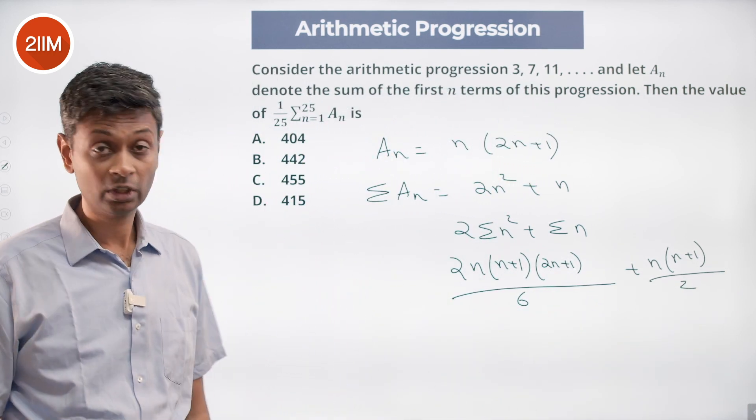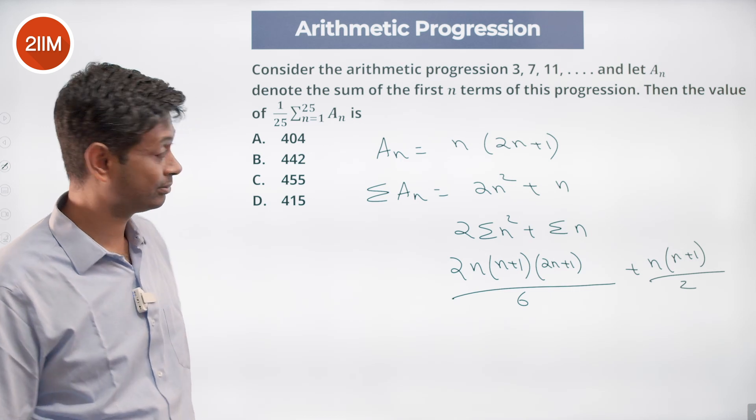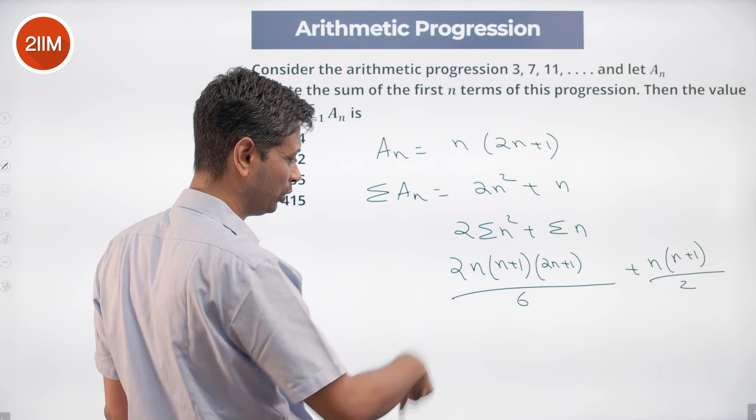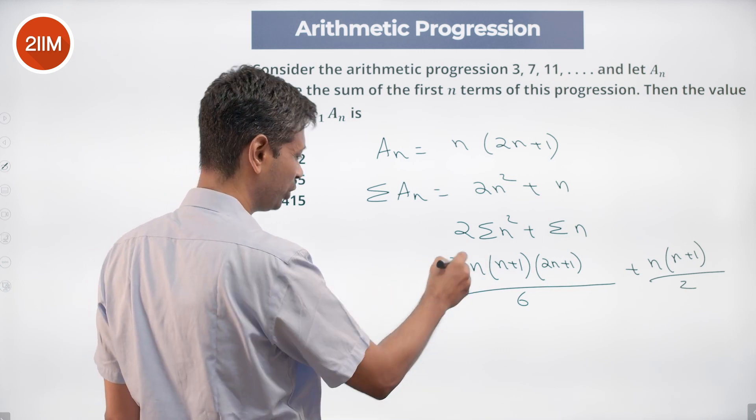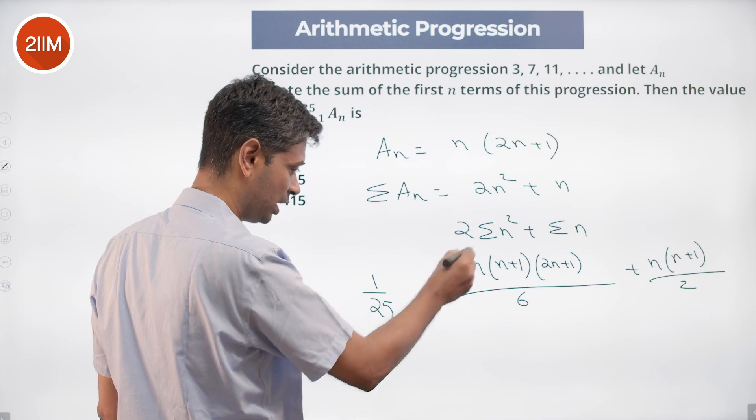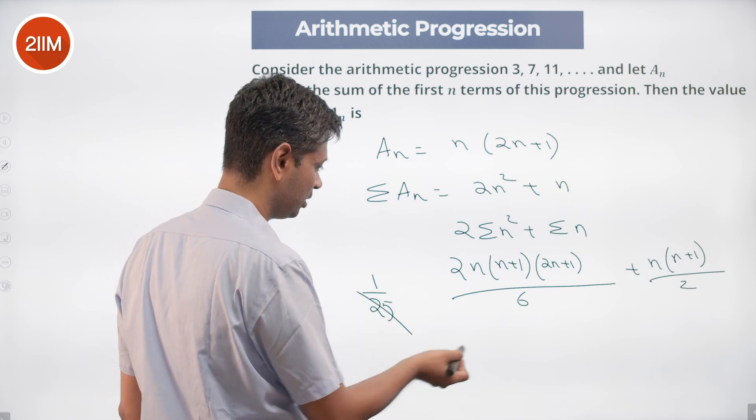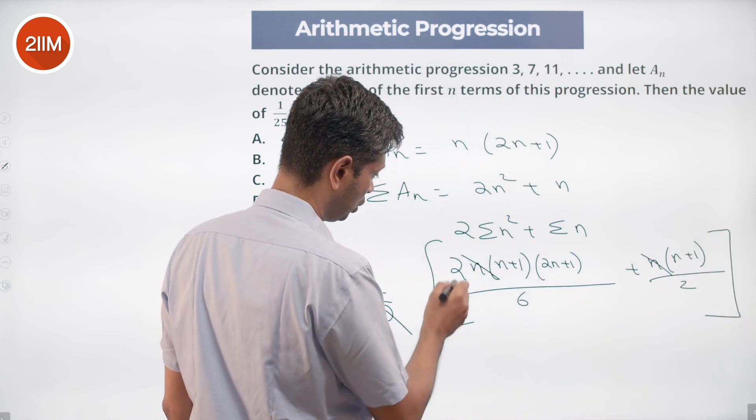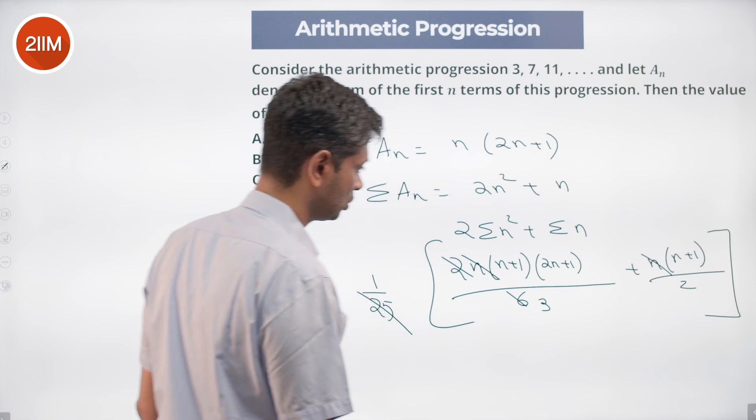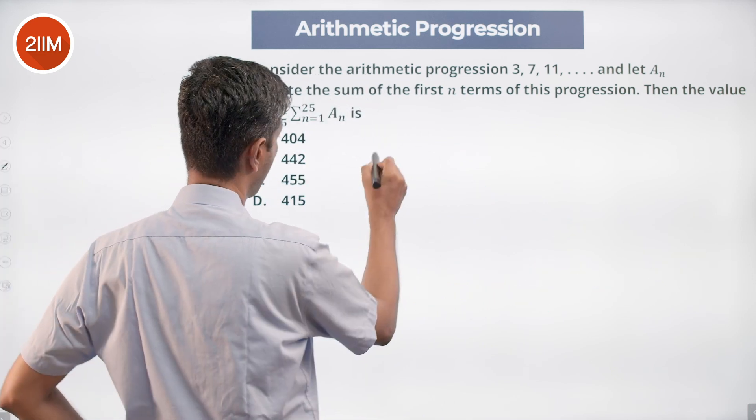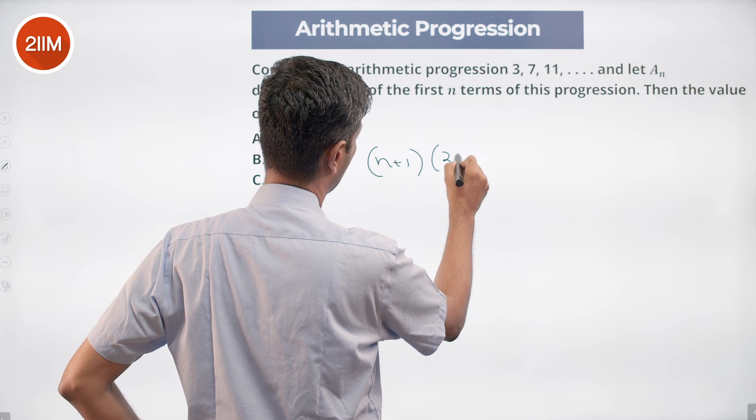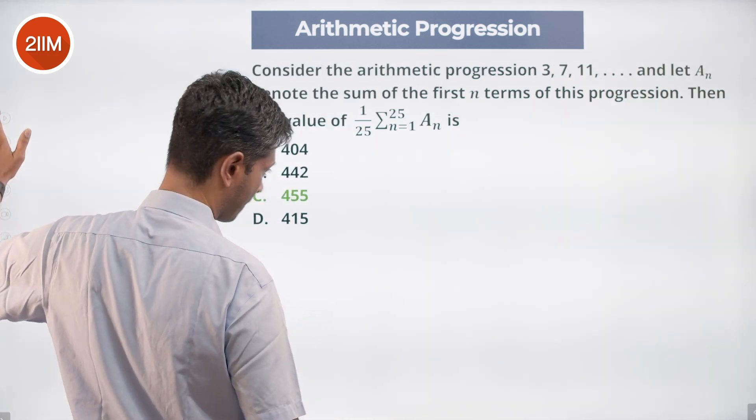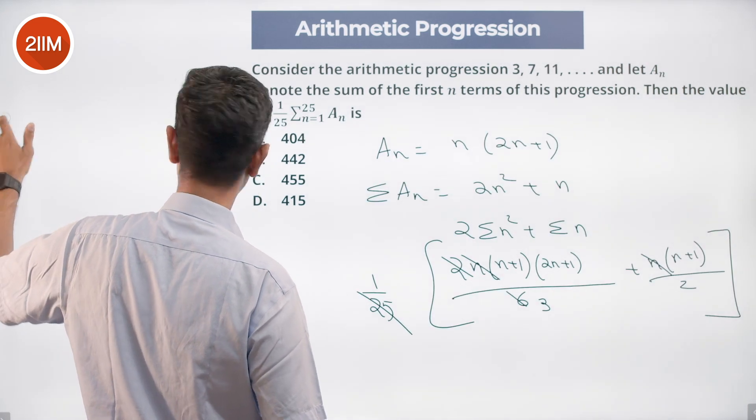I substitute n equal to 25 and then divide by 25. We have 1/25 outside. Put n equal to 25 and do 1/25. n is 25. Cancel 1/25 completely. 2/6 is 1/3. (n+1) into (2n+1) by 3 plus n(n+1) by 2.